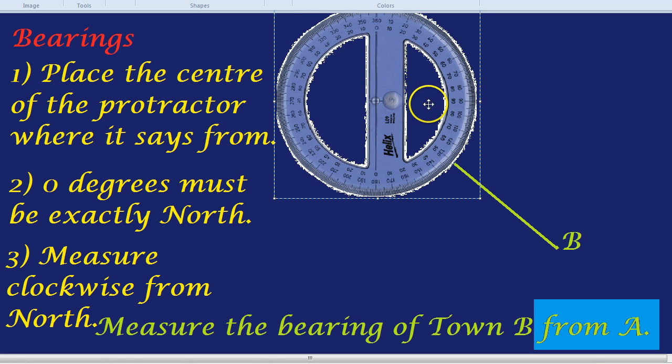Notice with my protractor, zero is automatically at north. But for your case, you would have to turn it around carefully until zero degrees up here is north. It's a direct straight line north. So we've done step one and step two.